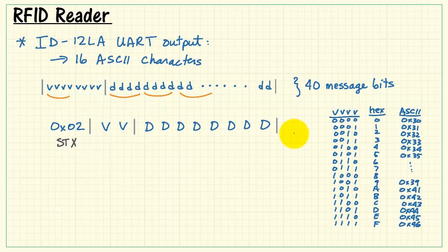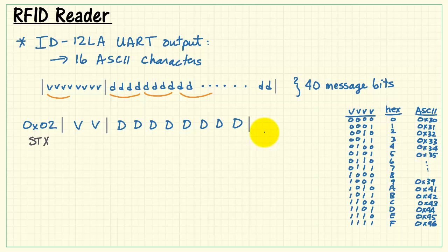I'll just use capital V to indicate that you're inserting two ASCII characters for the version number. The same process is repeated with our 32-bit ID, and we end up with eight ASCII characters. Next, the ID12LA inserts two ASCII characters representing a checksum. We'll come back to that in a second.